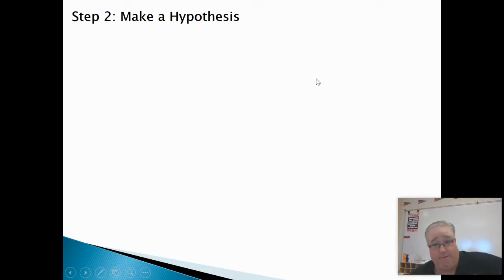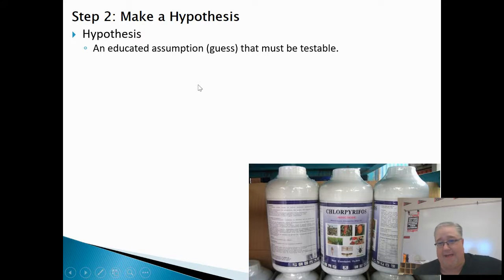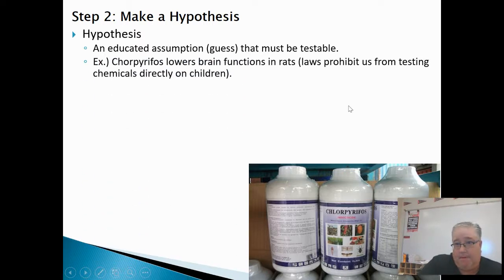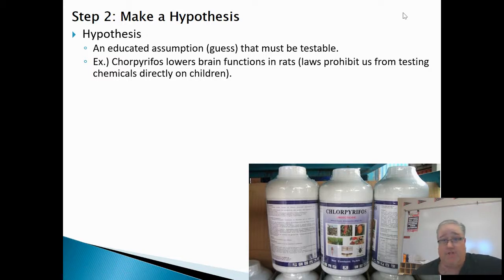The second part of the scientific method is to make a hypothesis. A hypothesis is an educated guess — or as I use the term, an educated assumption — but it has to be something testable. Our hypothesis here is: chlorpyrifos lowers brain function in rats. Notice we're using rats instead of children because there are laws that prohibit testing chemicals on kids. Is that hypothesis true? We don't know yet — it's just an assumption we have to test.